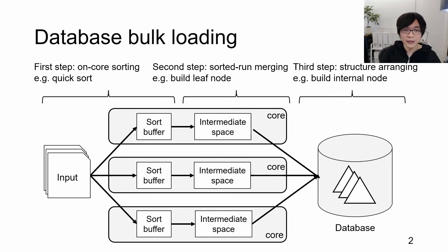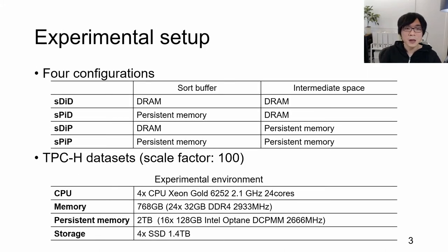In this talk, we compared all four patterns using DRAM and persistent memory for sort buffers, and using DRAM and persistent memory for intermediate space. We used the line item table defined in the TPC-H dataset, utilized our homegrown database engine, and used 4-socket machines with 16 persistent memories and 24 DRAMs.